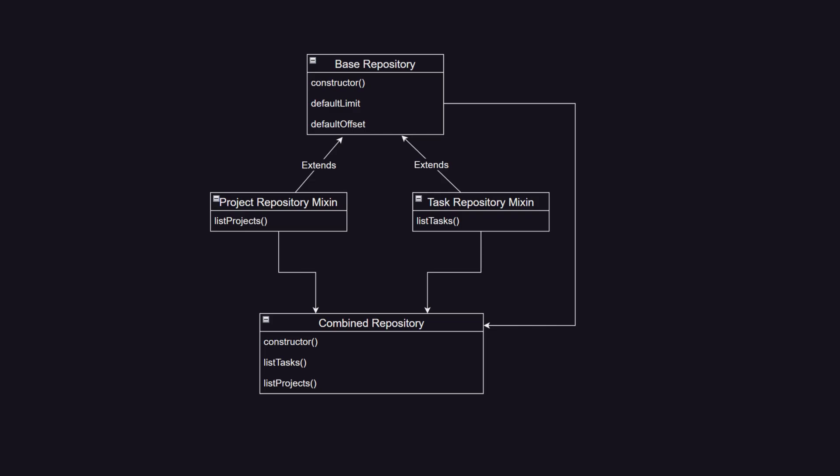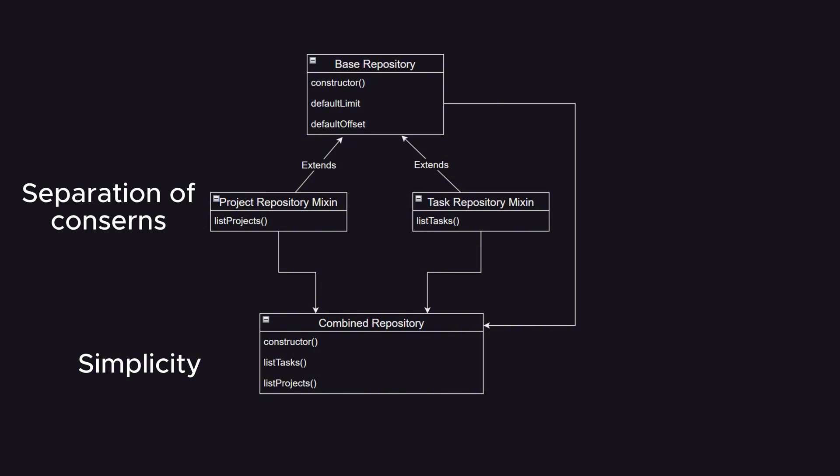Now let's take a look at how we're going to implement the repository. We're going to use TypeScript mixins with inheritance. This approach provides simplicity — the client code just has to import the repository and call appropriate methods. It also provides separation of concerns, where each mixin is designed to handle a specific entity: project or task. Since both mixin repositories extend the base repository, they inherit its functionality, enabling efficient code reuse and adherence to the DRY (Don't Repeat Yourself) principle. Much like Russian dolls, the mixins and the base repository are combined into a single repository that is instantiated and imported in the client code.